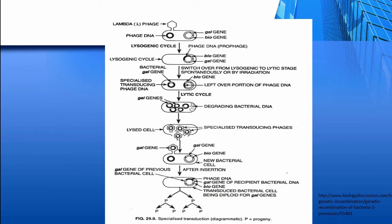The best-studied specialized transducing phage is the lambda phage of E. coli. The lambda genome inserts into the host bacterial chromosome at specific locations known as attachment sites. The location of the lambda prophage in the bacterial chromosome is always between the bacterial genes for galactose metabolism — gal — and bio.